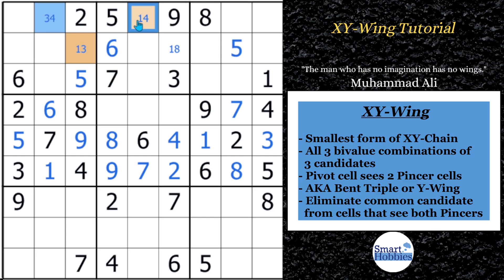And then the other two, the orange cells are called pinchers. They can also be called wings. And they're not going to be able to see each other. If they saw each other, like if it was over here, that would just be a naked triple. If they're in the block, if they're in the row, or in the column, all together, that would be a naked triple. It's also called a bent triple for this reason, because it's going to be bent a little bit. And also, XY wings are also called Y wings. You might hear that on Cracking the Cryptic. They use the term Y wing. It's the same thing.